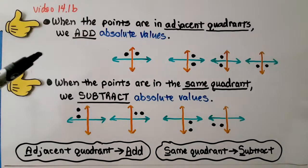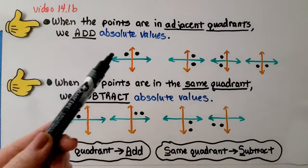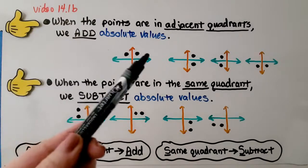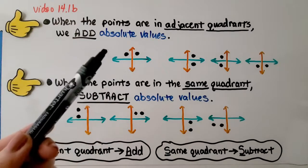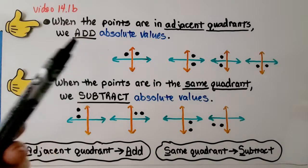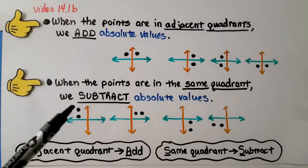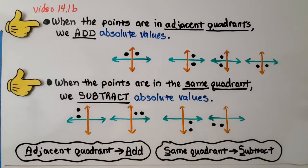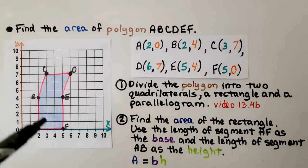When the points are in adjacent quadrants — quadrants that are next to each other, not in the same quadrant — we add the absolute values. When the points are in the same quadrant, we subtract the absolute values. So here we have a coordinate plane and we have a figure drawn on here; it's a composite figure.